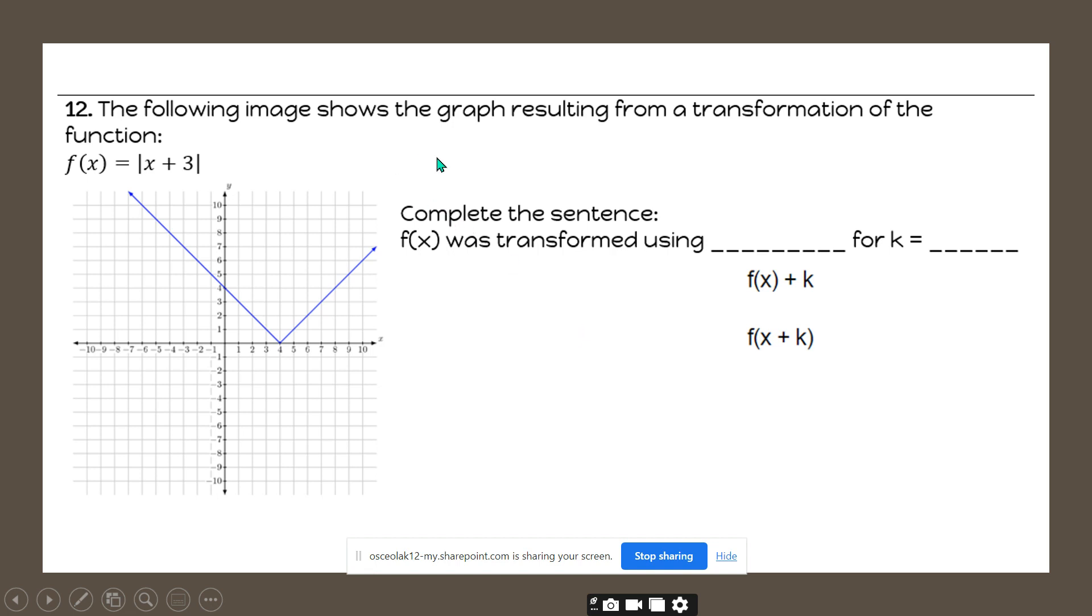It says the following image shows the graph resulting from a transformation of the function. So we must graph the given function first. This may look a little tricky because you may assume that this function is this function and it is not. If you look at the function that was given to us in function notation form, you'll notice that the vertex of this function is (-3, 0).